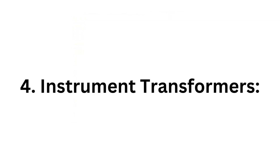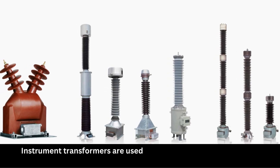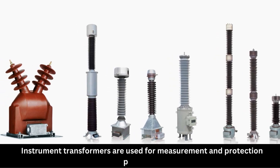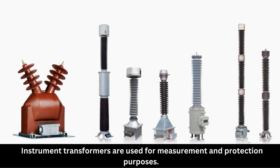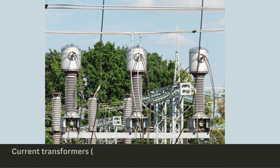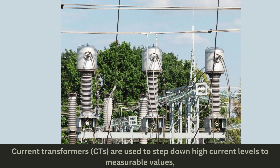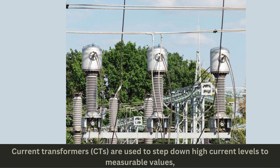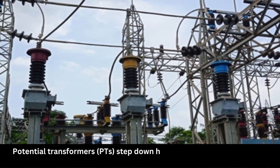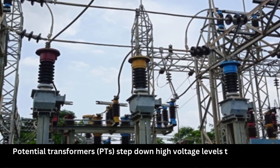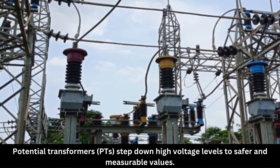4. Instrument transformers. Instrument transformers are used for measurement and protection purposes. Current transformers (CTs) are used to step down high current levels to measurable values, while potential transformers (PTs) step down high voltage levels to safer and measurable values.